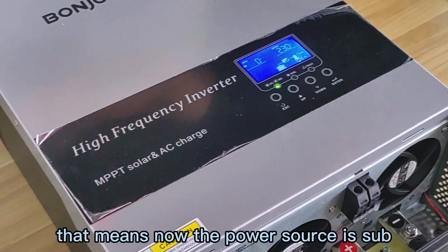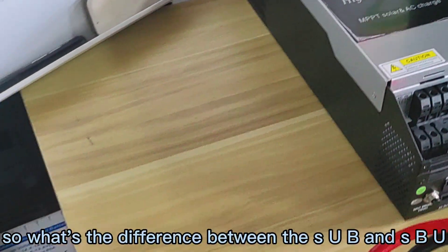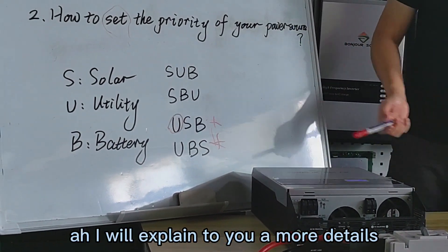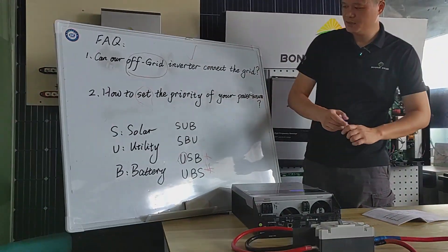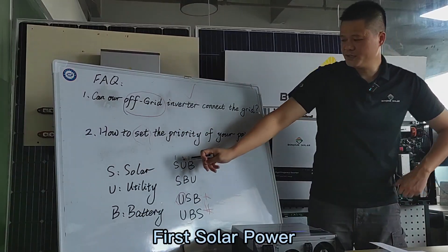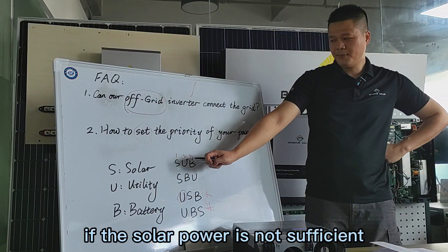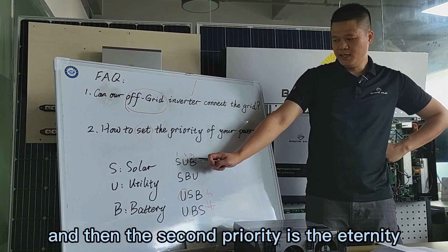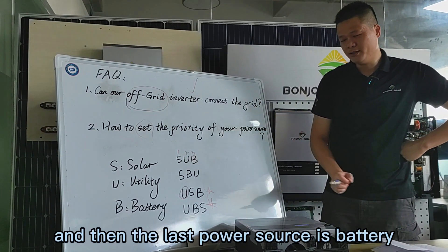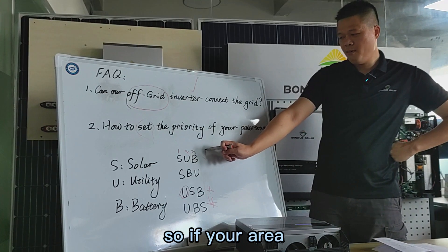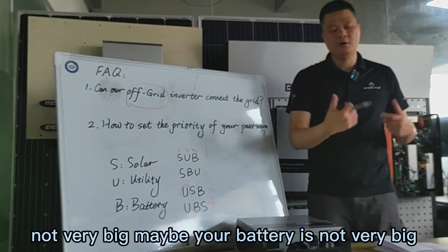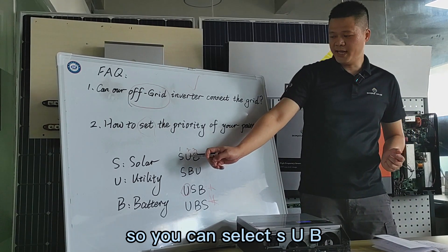Now the power source is set to SUB. What is the difference between SUB and SBU? SUB means: first priority is solar; if solar is not sufficient, second priority is utility; last is battery. This is recommended if your area's utility is stable and your battery capacity is not very large.